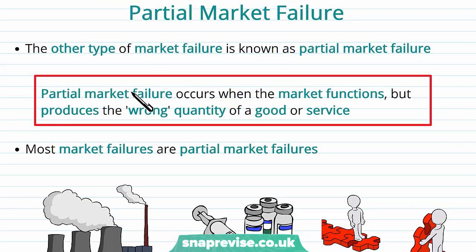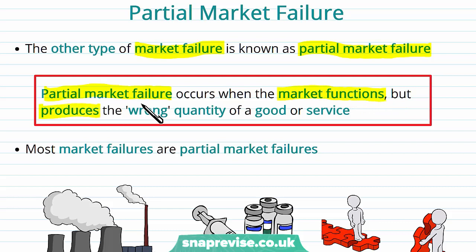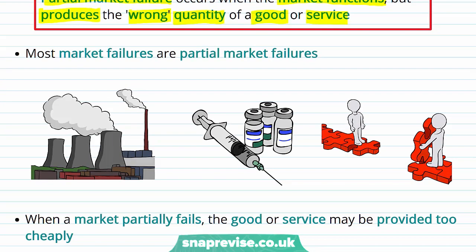Now we're going to consider probably one of the more common types of market failure: partial market failure. Partial market failure occurs when the market functions but produces the wrong quantity of a good or service. There is some supply meeting demand, but there is a partial market failure because the wrong quantity is being produced — the efficient quantity of a good or service is not being supplied to or demanded from the market.